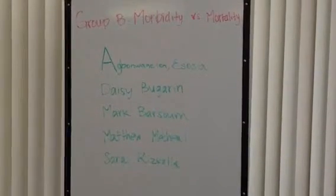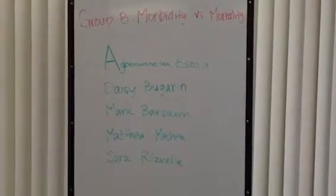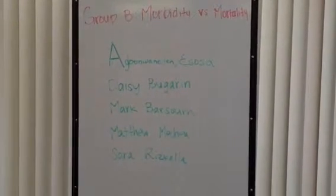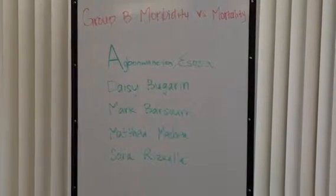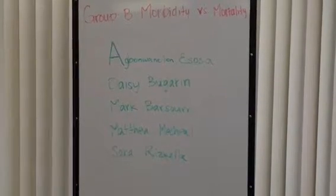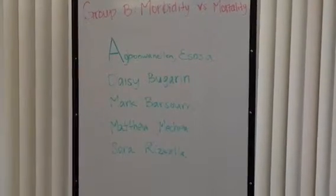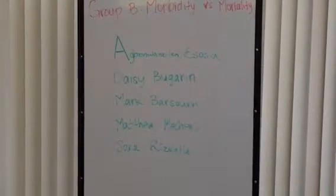This is Group B doing our video on morbidity versus mortality. We are Esosa, Daisy, Mark, Matthew, and Sarah.